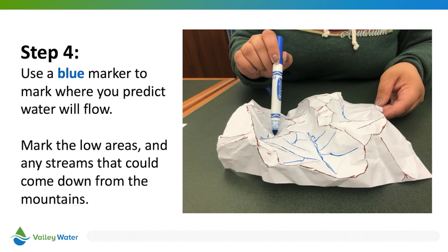Next, use the blue marker to mark where you predict the water will flow. Remember to mark any streams that could come down from the mountains, as well as any rivers or lakes that you think may form.